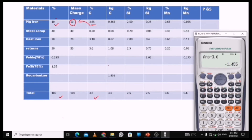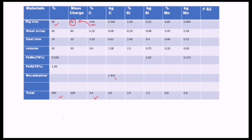So the 1.455 — look here, we include the ferro manganese, the ferro silicon, and a recarburizer. With the recarburizer, it deals with carbon. So that means the reason why it's not adding up to 3.6 is because there's a recarburizer that you add to it. So you just subtract and then put the recarburizer amount here. So then you are done with that.